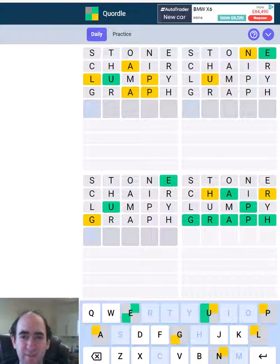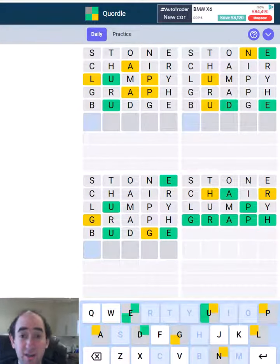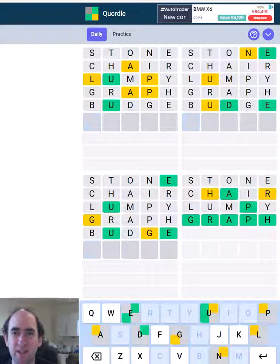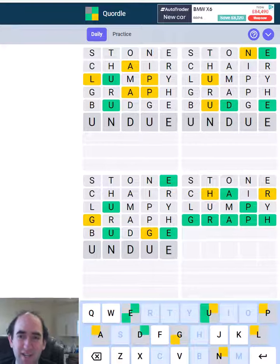Anyway, let's go for budge in the bottom left. It'll give us a bit more information, except it hasn't. At least we've got the D in the right place luckily in the top right. Let's see if that's undo.